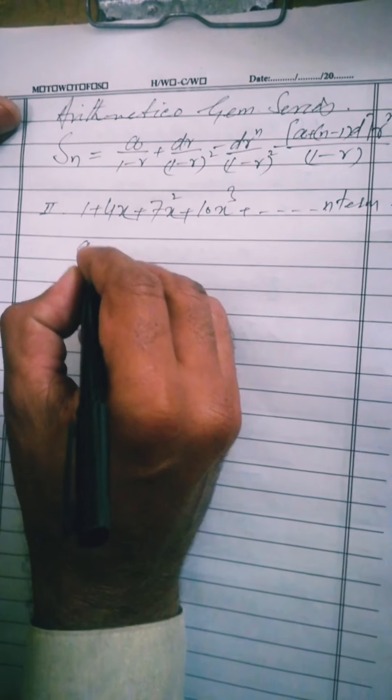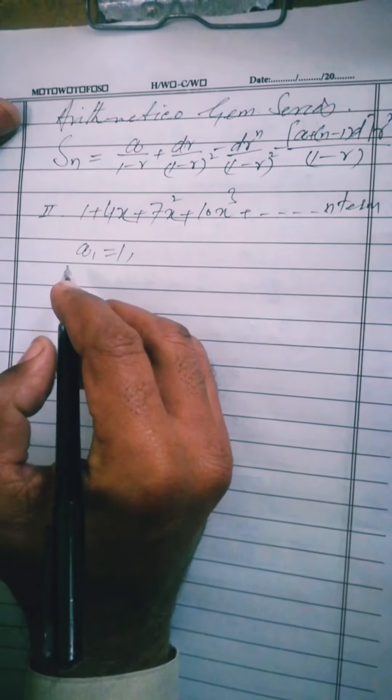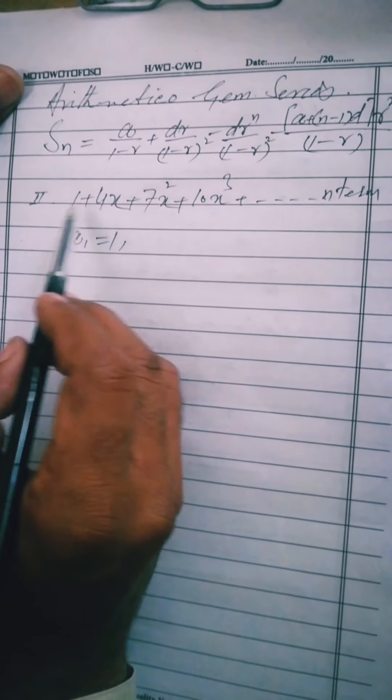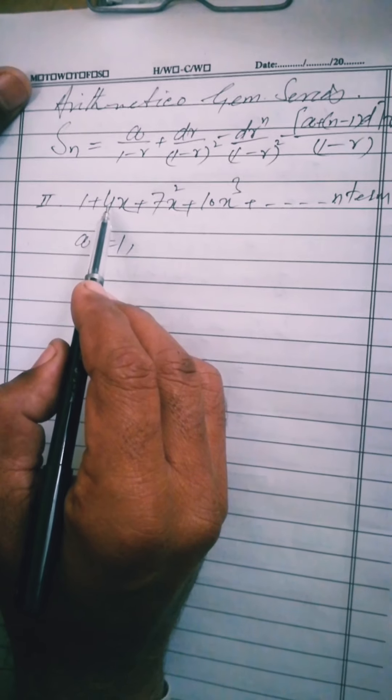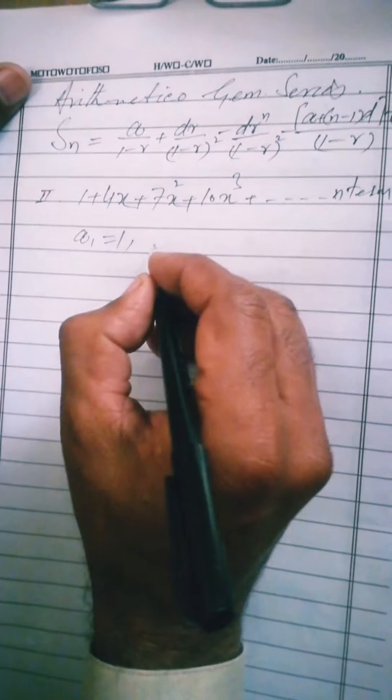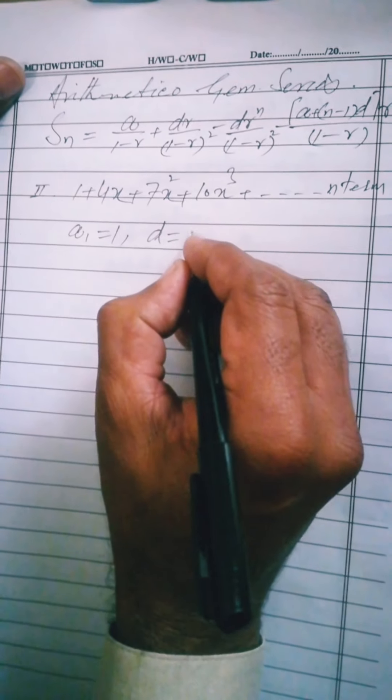1, this is a1. a1 equal to 1. Looking at the coefficients: 1, 4, 7, 10. This forms a series which is arithmetic. 4 minus 1 is 3. 7 minus 4 is 3. 10 minus 7 is 3. So d, d is 3.